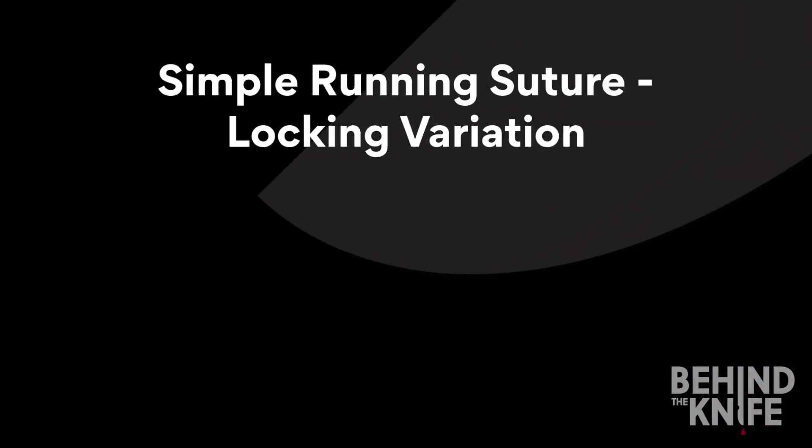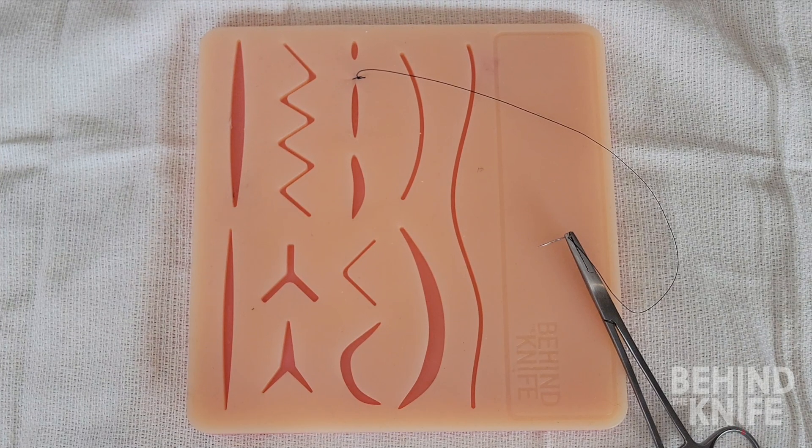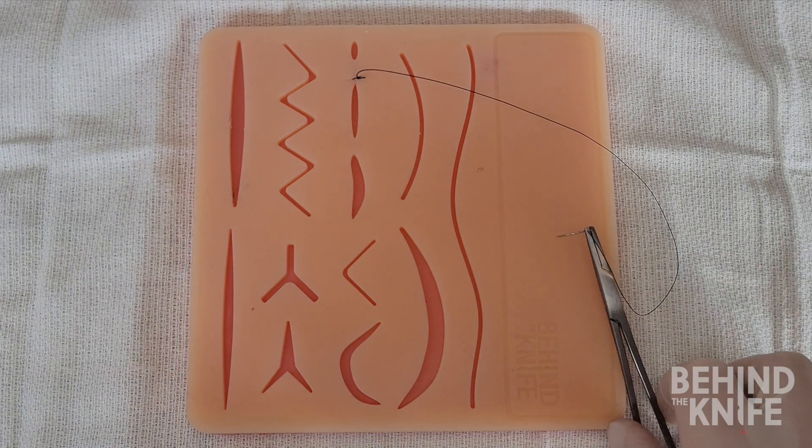If you would like to throw a simple running locking suture you will start the same way as the non-locking simple running suture with tying your anchoring stitch at the top of the wound.